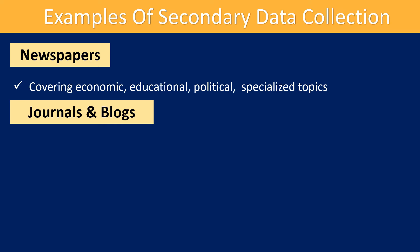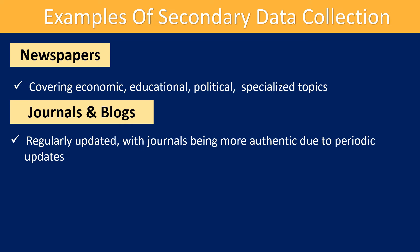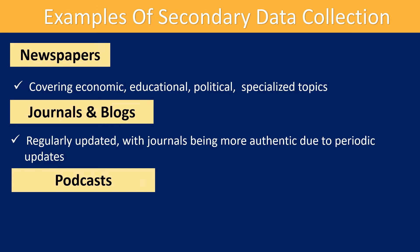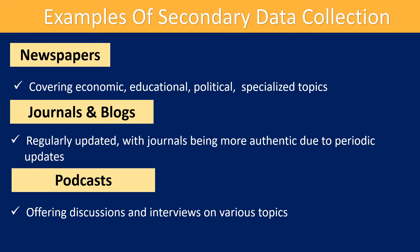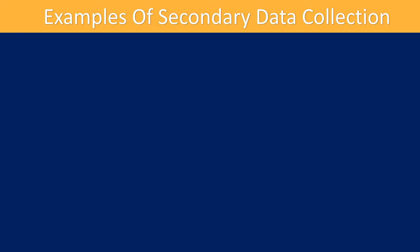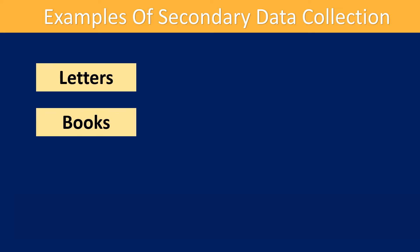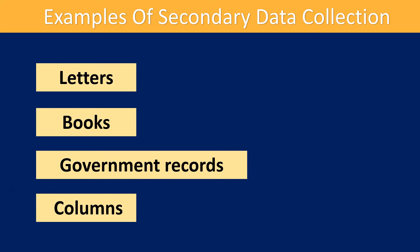Journals and blogs are popular examples of secondary data sources. They are regularly updated, with journals being more authentic due to periodic updates. Podcasts have also become a common source of secondary information, offering discussions and interviews on various topics. Other examples include letters, books, government records, and columns.